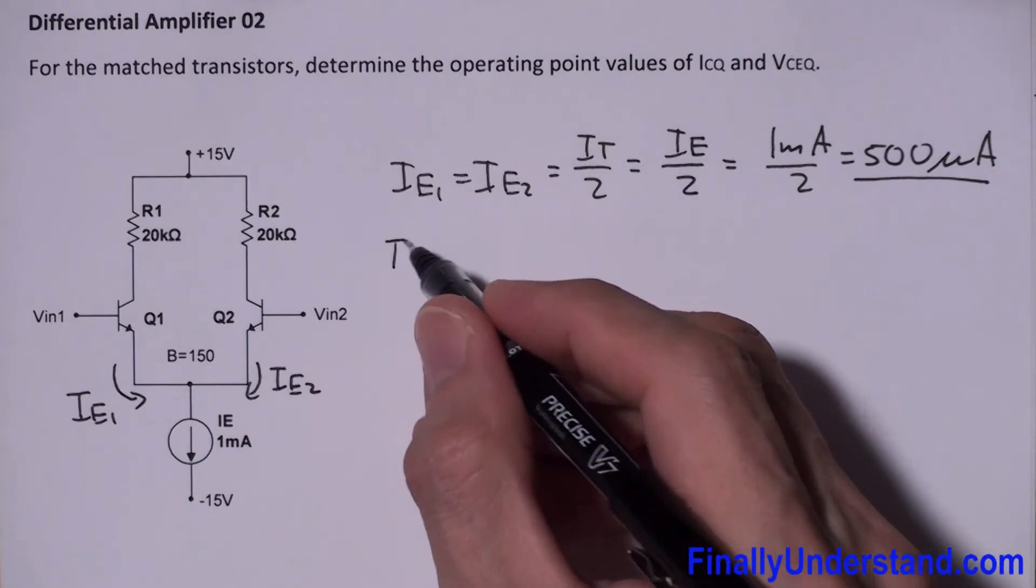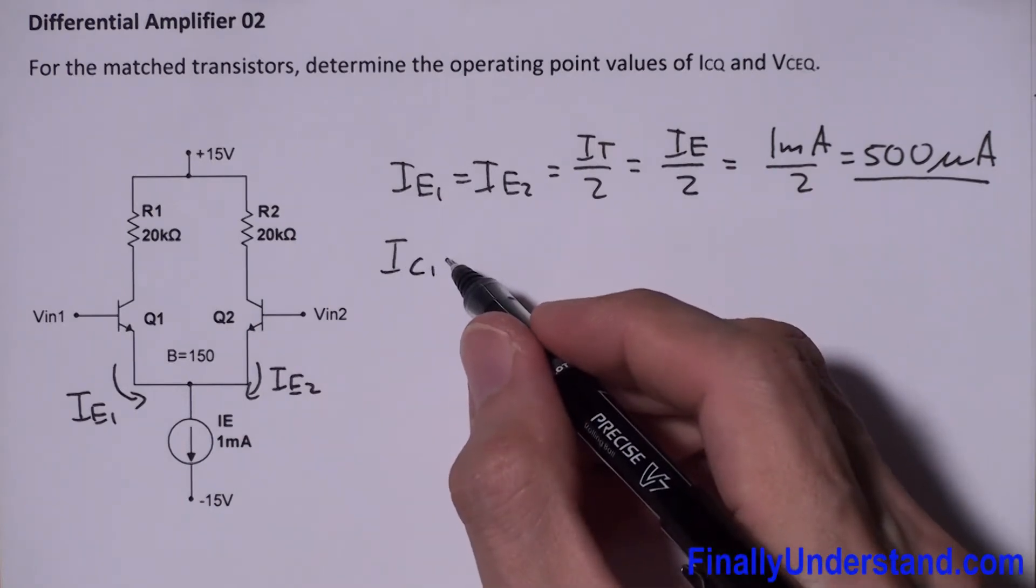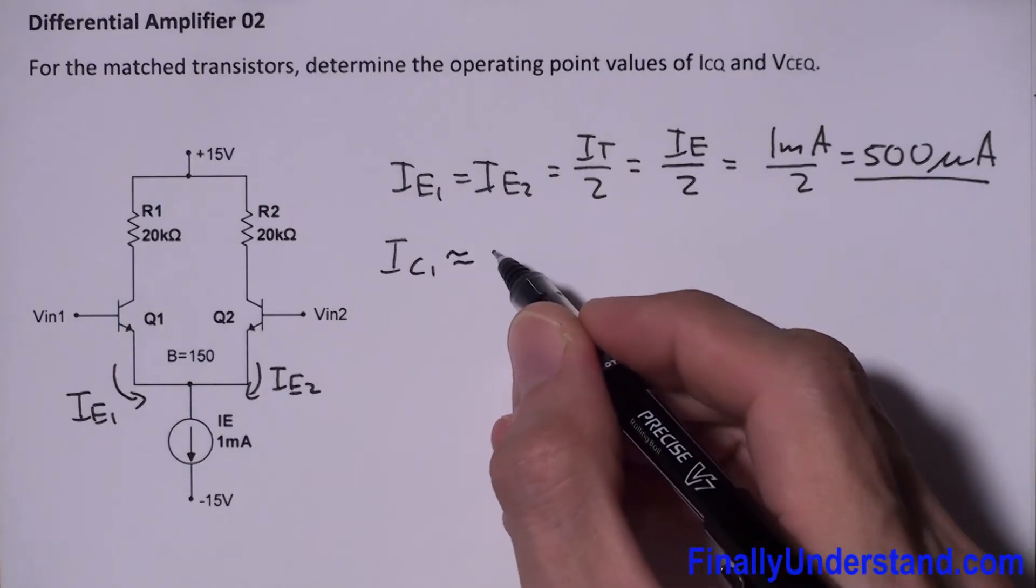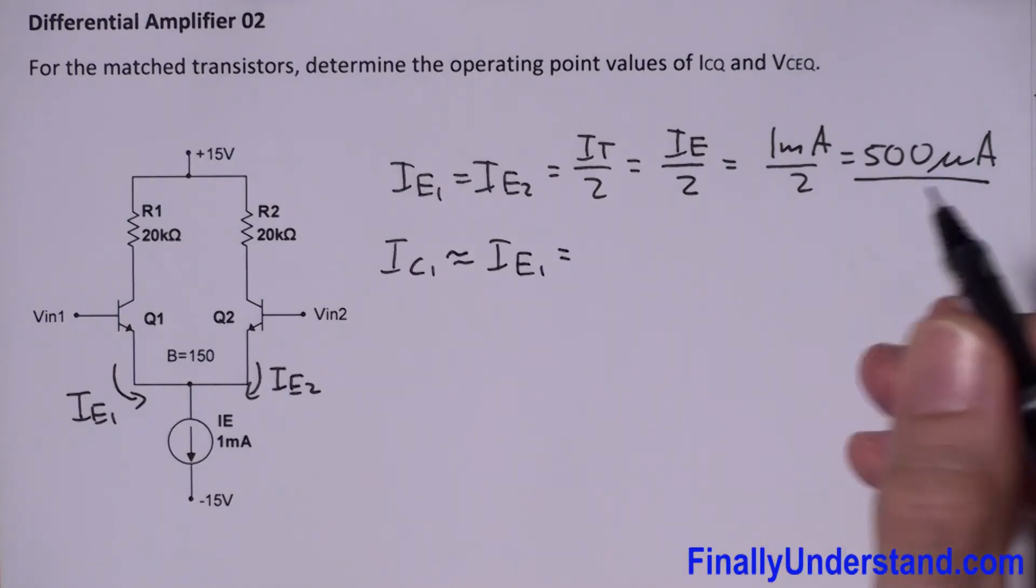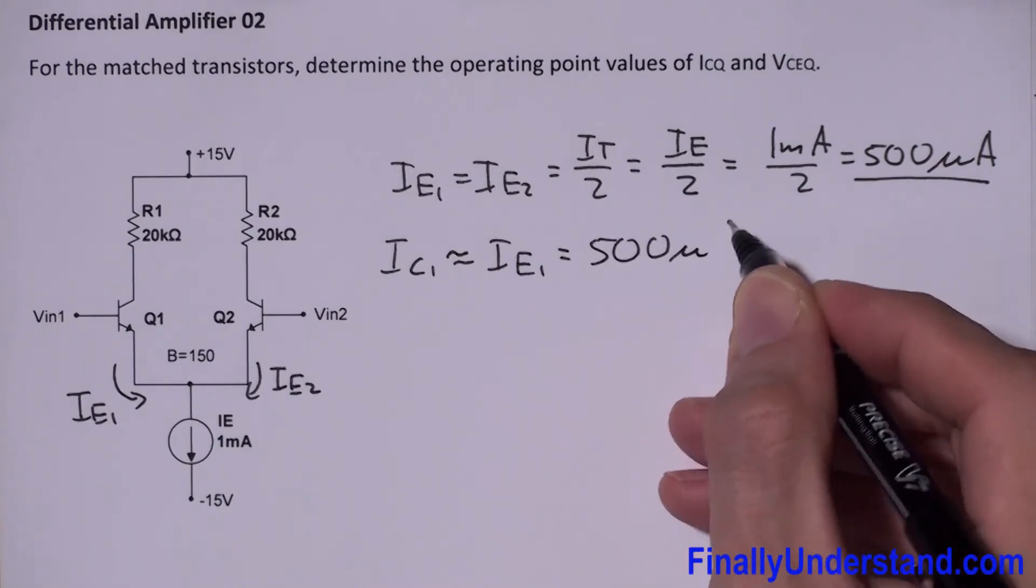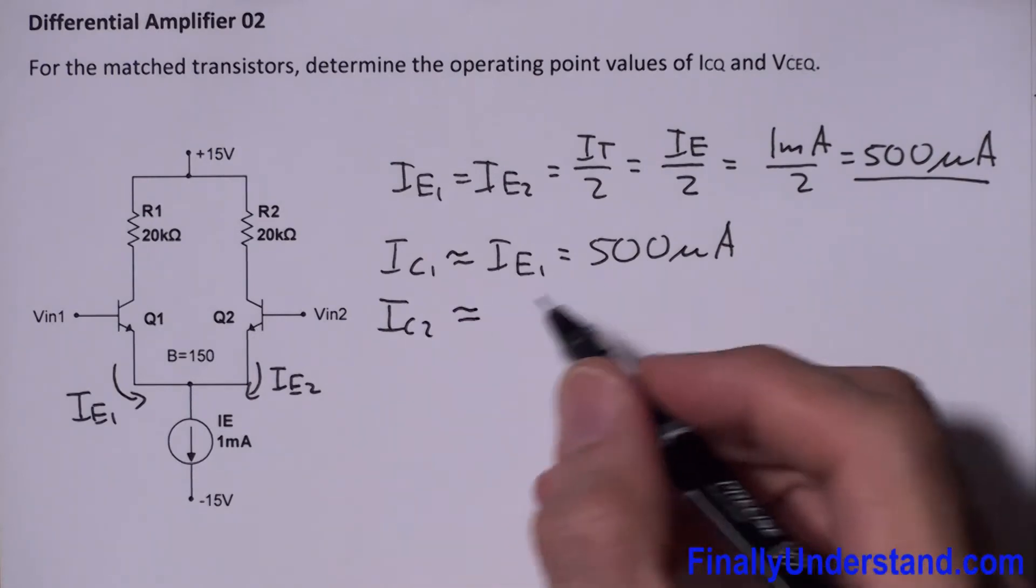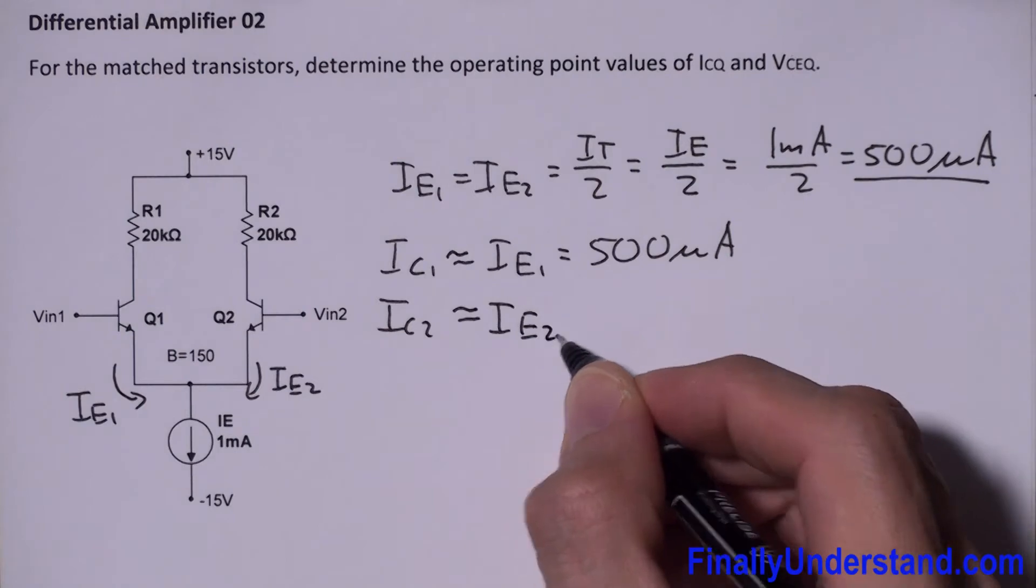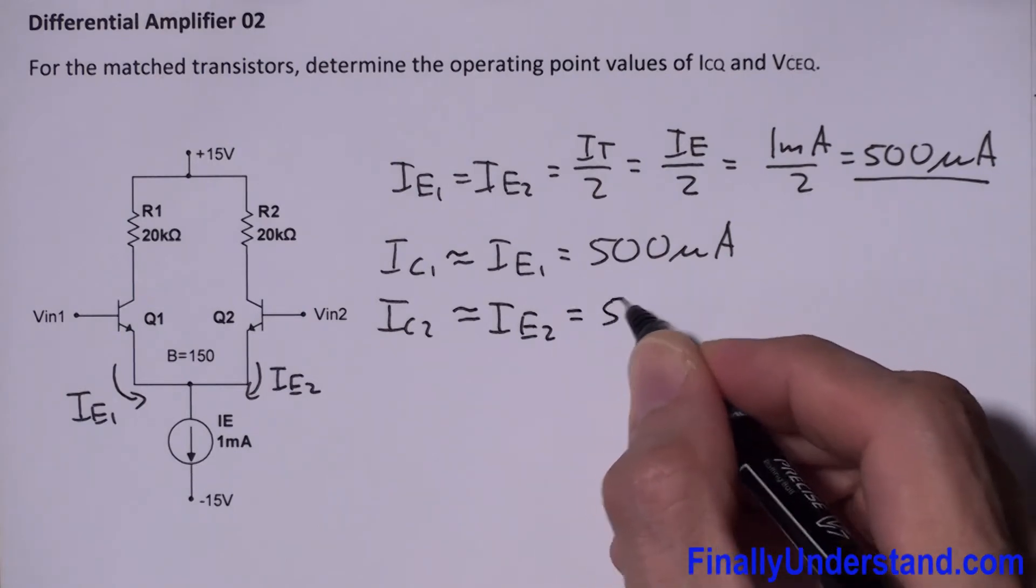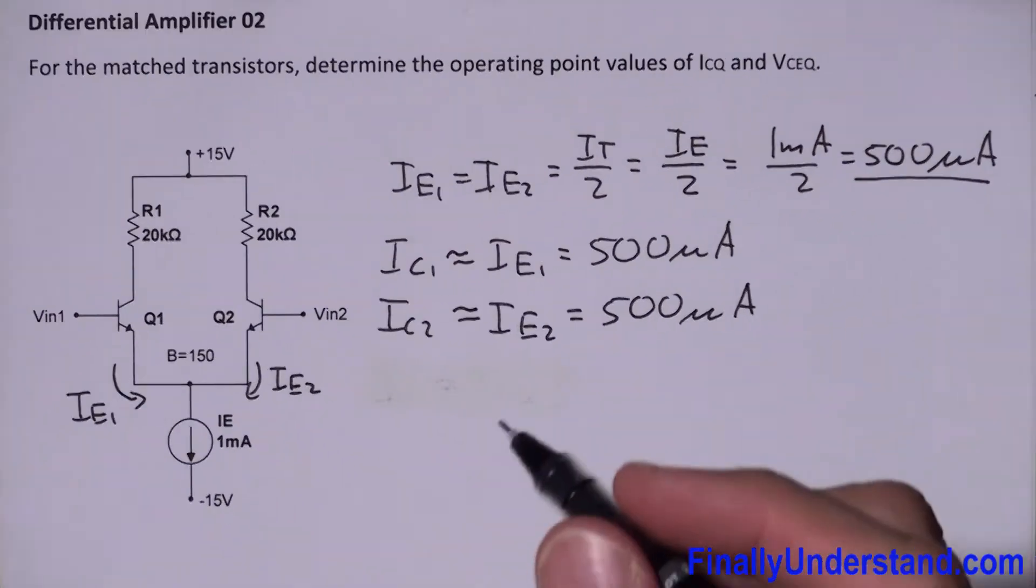So I can say that IC1 is approximately equal to IE1, and this equals 500 microamps. And IC2 is approximately equal to IE2, which is equal to 500 microamps. You're supposed to realize that...